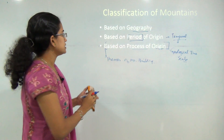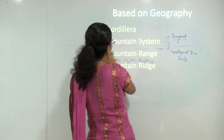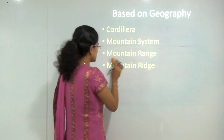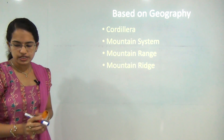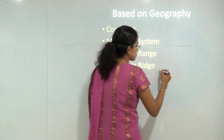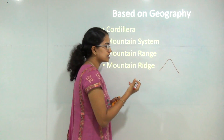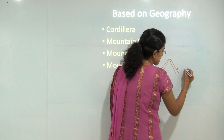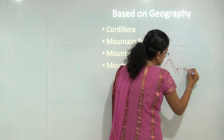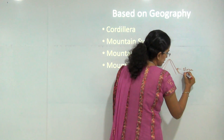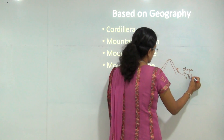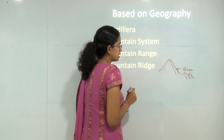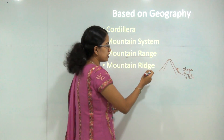Based on geography, we have four basic categories of mountain types. The first is a mountain ridge. A mountain ridge is a kind of high hill that has a slope and an angle of tilt. If a ridge is understood, then what is a mountain range? A mountain range is made of a series of ridges.